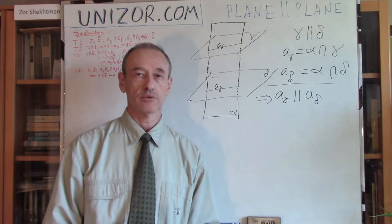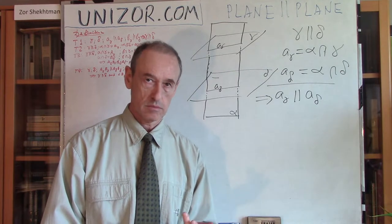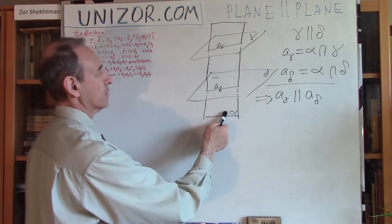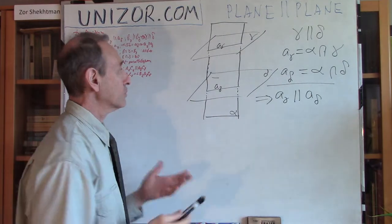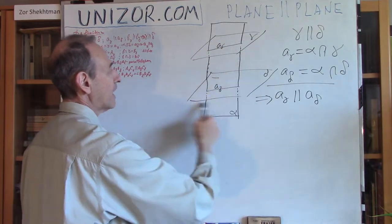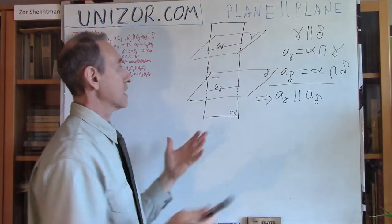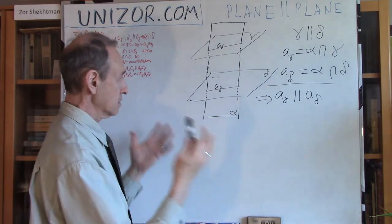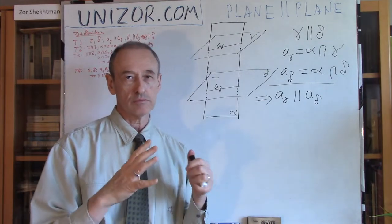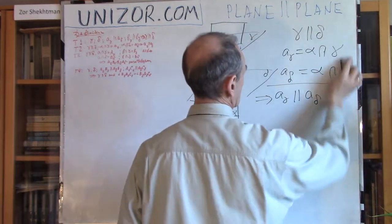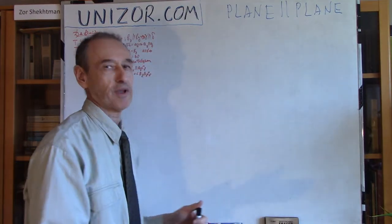When two lines are parallel in three-dimensional space, there are two conditions: they belong to the same plane, and they have no common points. Obviously they belong to the same plane because both A gamma and A delta lie in plane alpha — they are intersections of alpha with gamma and delta respectively. Can they have common points? Of course not, because if these two lines had a common point, it would mean the two planes they belong to, gamma and delta, have a common point — but we assumed they are parallel. So A gamma and A delta are in the same plane alpha and have no common points, therefore they are parallel. All these theorems are very simple — you just have to think logically.